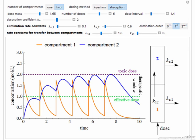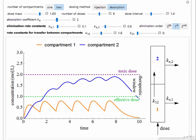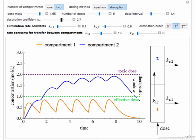We also have the option of selecting absorption, and now the dose, you notice the orange injection is not as sharp because it's absorbing from a different compartment, and we can change that absorption coefficient.